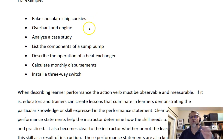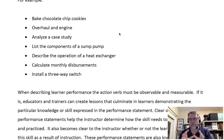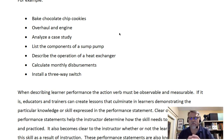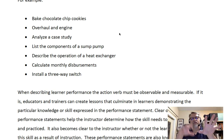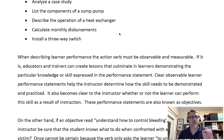Bake chocolate chip cookies, overhaul an engine, analyze a case study, list the components of a sump pump, describe the operations of a heat exchanger, calculate monthly disbursements, install a three-way switch. These are things that the learner can do. These are things that are measurable. These are activities that fall into the alignment of outcomes, activities and assessment — or objectives, activities and assessment. It's really important that you understand that you're focusing on what the learner can do.